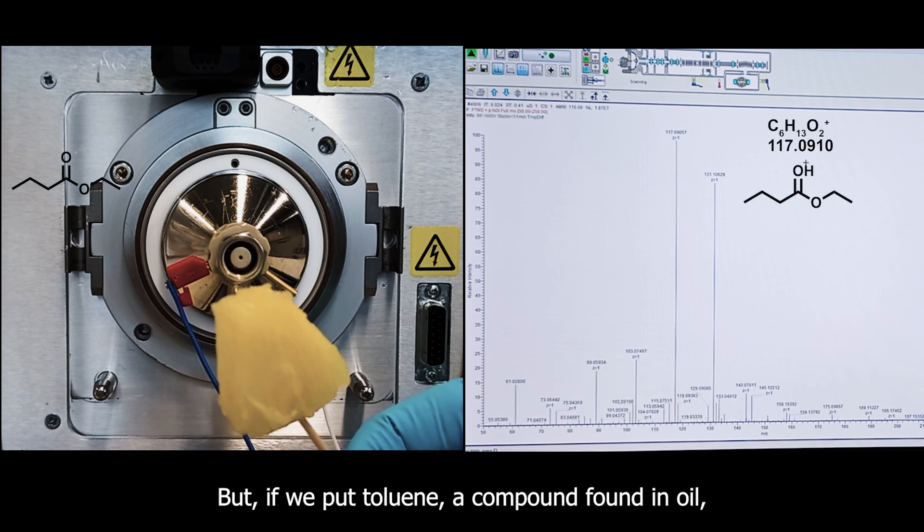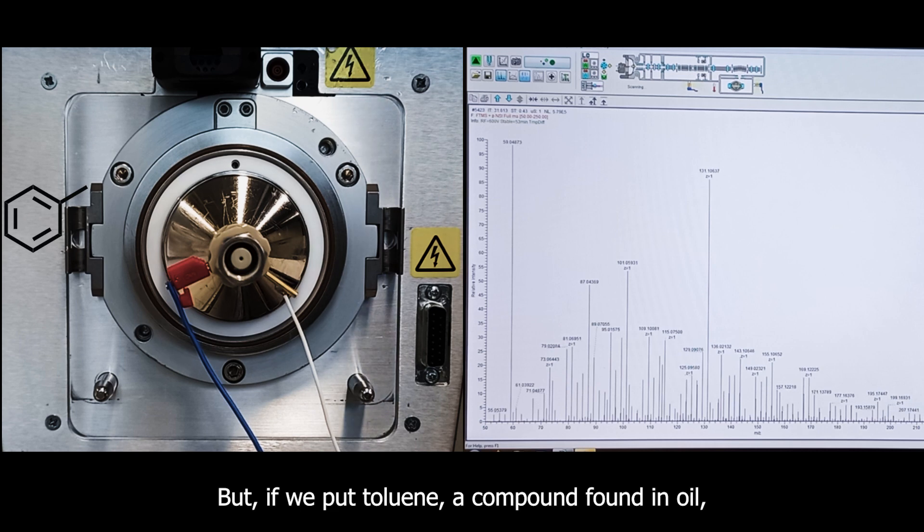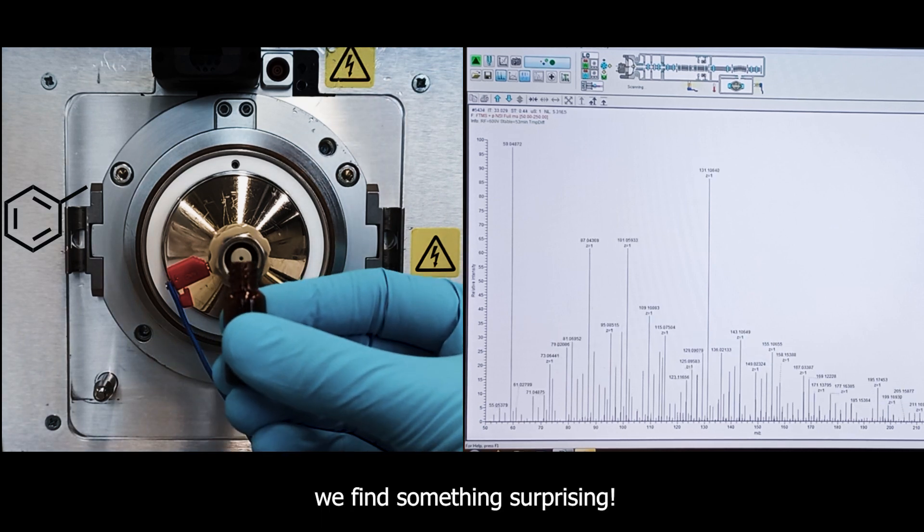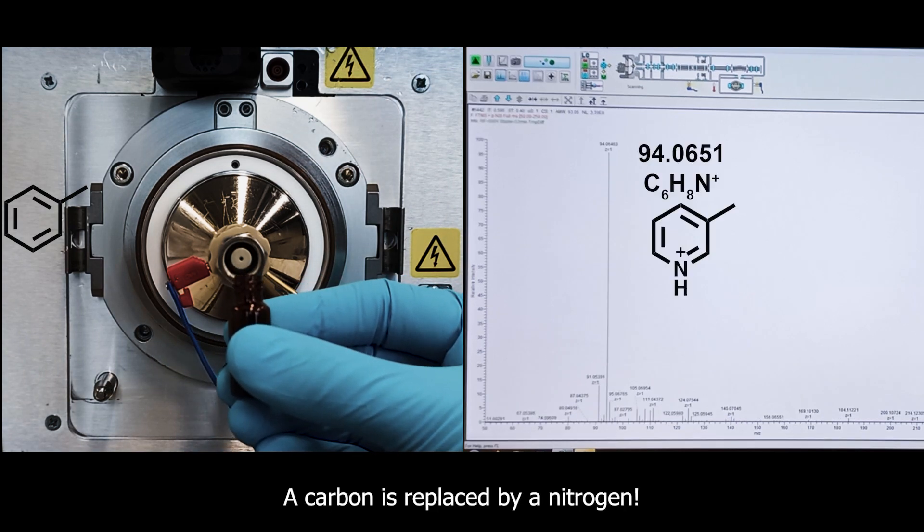But if we put toluene, a compound found in oil, we find something surprising. A carbon is replaced by a nitrogen.